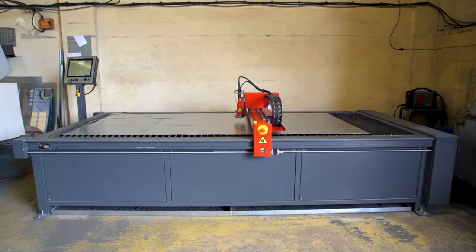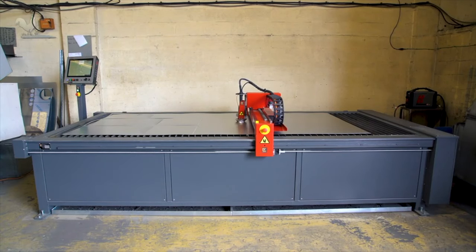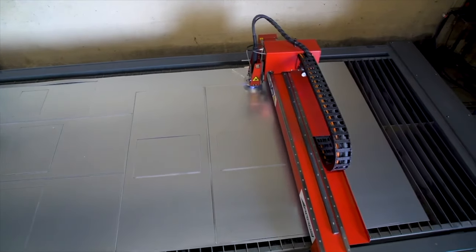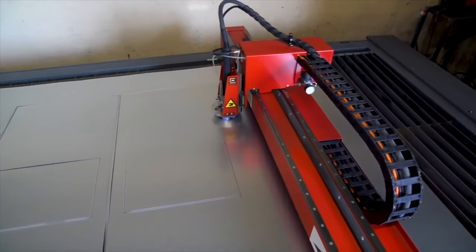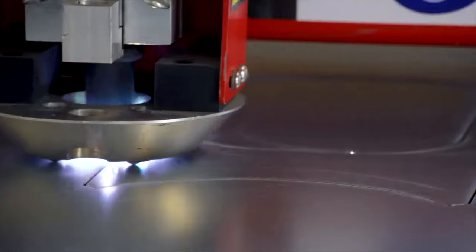The Arrow comes in a compact 1.5 x 3m size with an edge connect control. This Arrow is cutting 1.2mm galvanised steel at 6.4m a minute with a Hypertherm Powermax 45 XP.